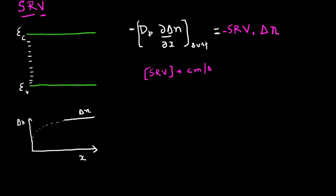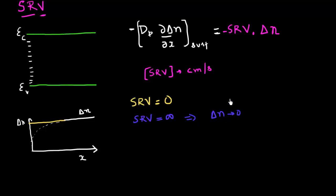Let me consider two cases. First, consider the case in which the surface recombination velocity is zero. That means there's a well-passivated surface and there's no recombination happening, so there'll be no gradient in the carrier concentration as it reaches the surface. On the other hand, if the surface recombination velocity is infinite, then according to this equation, delta N has to be equal to zero to maintain a finite diffusion current. What it means is that for surface recombination velocity equal to infinity, this excess carrier concentration would reduce to zero as I approach the surface.